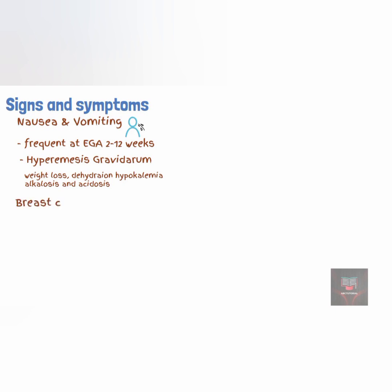Breast changes also occur during pregnancy, such as increase in breast size, increased breast tenderness, the nipples become larger, more pigmented, and more erectile, the areola becomes broader and more pigmented, and colostrum will be expressed from the nipples.